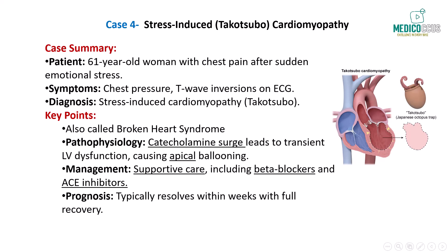Takotsubo cardiomyopathy results from a catecholamine surge that leads to transient myocardial stunning, predominantly affecting the apical segments of the left ventricle. Although it mimics acute coronary syndrome, the absence of significant coronary artery disease on angiography differentiates it from a true myocardial infarction. The NBME frequently tests on the differential diagnosis of acute chest pain, emphasizing conditions like takotsubo cardiomyopathy. Knowing how to differentiate this from ischemic heart disease is crucial for the exam.